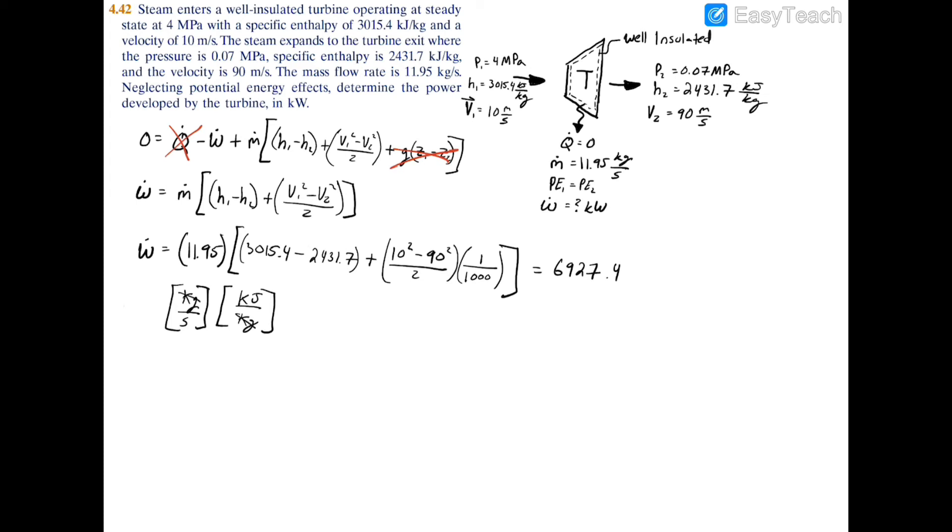And if you multiply across, you'll have the kilograms cancel out and you'll be left with a kilojoule per second, which is equal to a kilowatt.